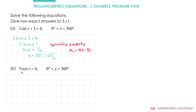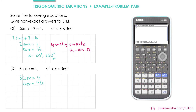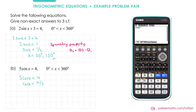For part b, we have 5 cos x equals 4, and we have the same region: 0 is less than x is less than 360 degrees. First of all, we'll divide both sides by 5 to get cos x equals four fifths. This time we need to use our calculator to find the first solution — we do inverse cos of four fifths, and rounding to three significant figures we get x equals 36.9 degrees.